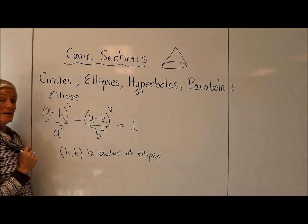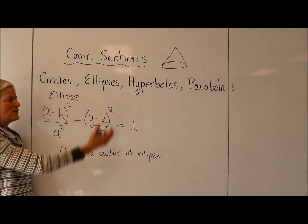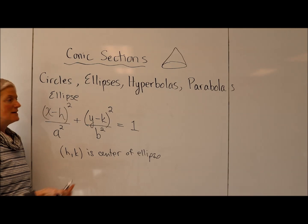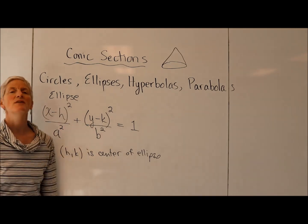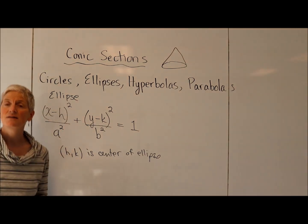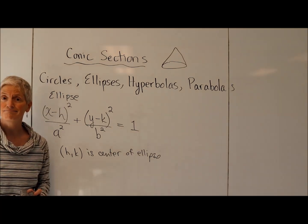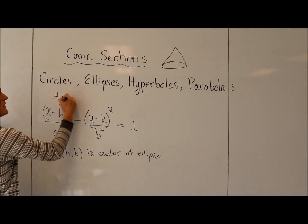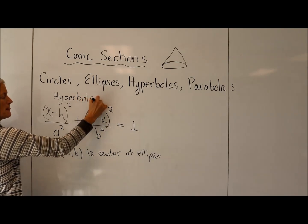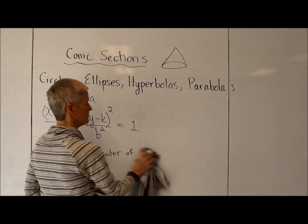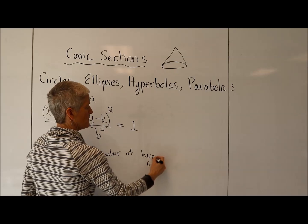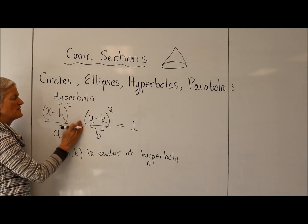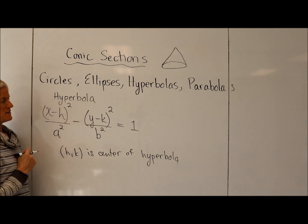A hyperbola again has a similar kind of structure, except that a hyperbola has the coefficients of X squared and Y squared as opposite signs — one is positive and one is negative. Let me show you the general form of a hyperbola. Very much like the ellipse, except one of these has to be positive and one has to be negative.